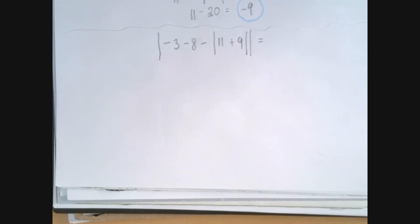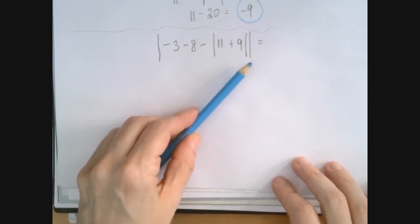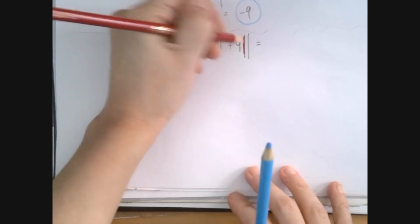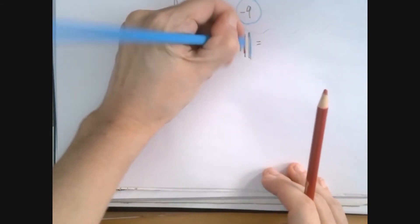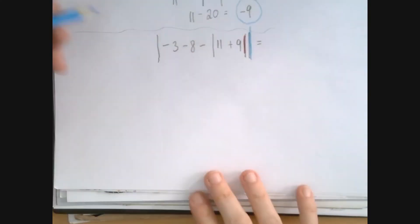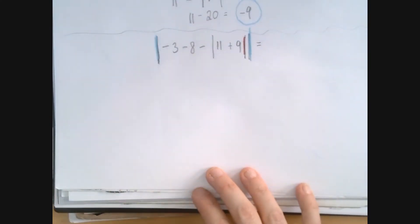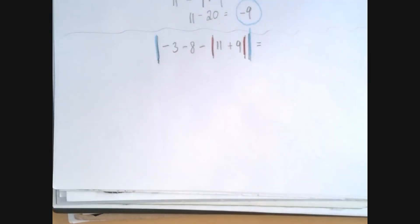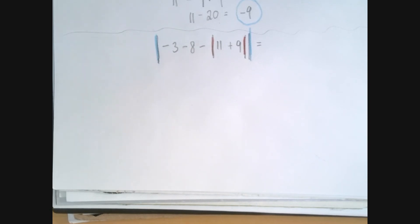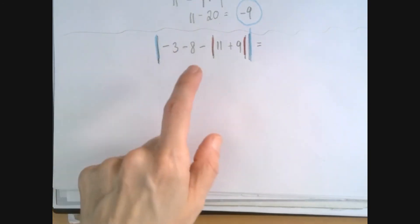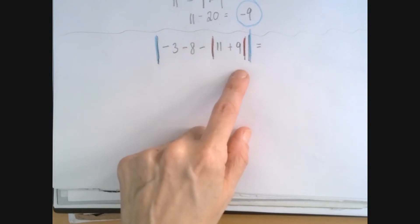Let's see this next one. Again, we start by pairing up the absolute value signs. This double one cannot be a pair, so because they are at the end, this is closing one pair and this is closing another pair. The only way this is meaningful is if they are nested inside each other. We have the absolute value of what we get when we take negative 3, subtract 8, and subtract whatever the absolute value of 11 plus 9 is.